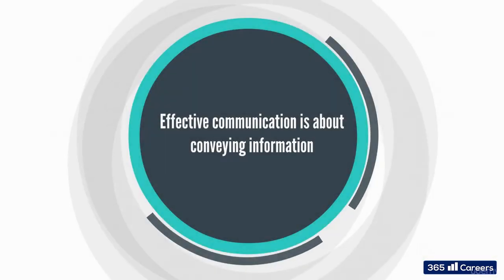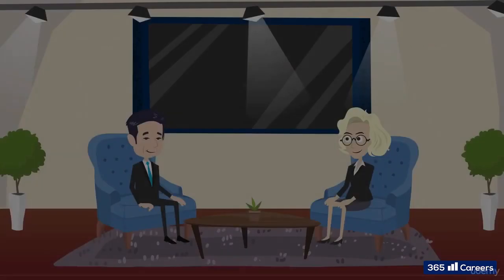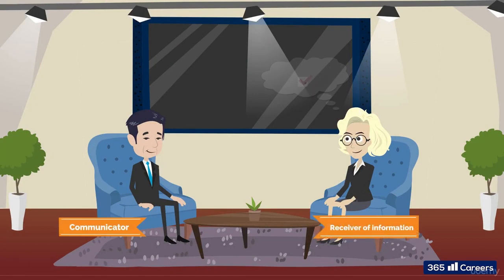Effective communication is about conveying information. This can happen only if the communicator and the receiver of information start from a common basis. They need to use the same language, symbols, or images. Otherwise, recipients won't grasp the message.